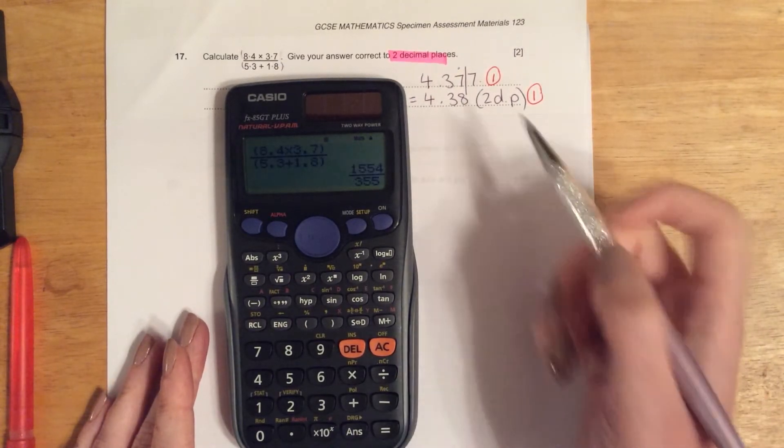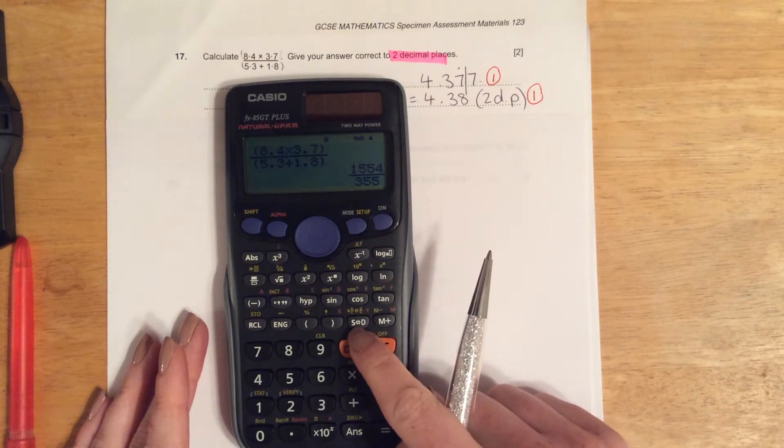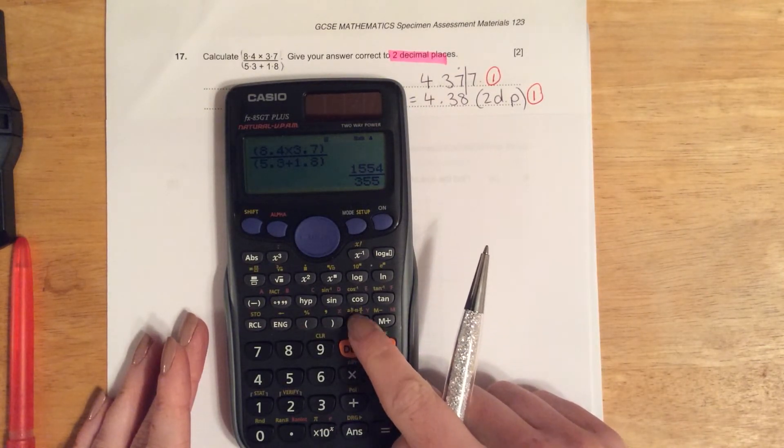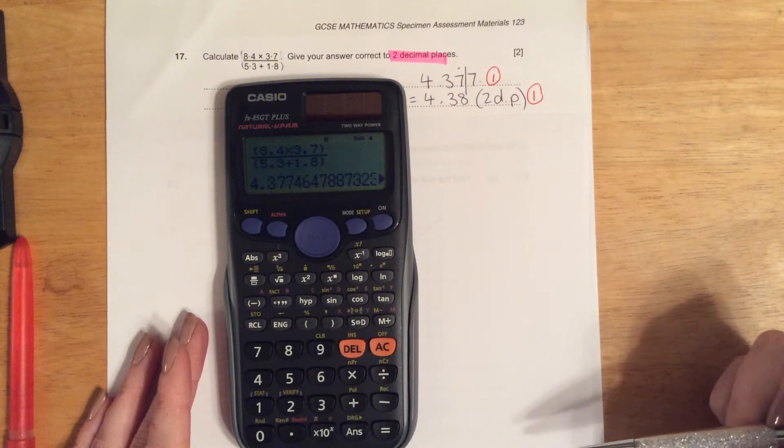If I press equals, you'll see that it comes up as a fraction first. That's the setting my calculator is on, so I need to press this button here to change it to a decimal, and then this is the answer that we saw earlier.